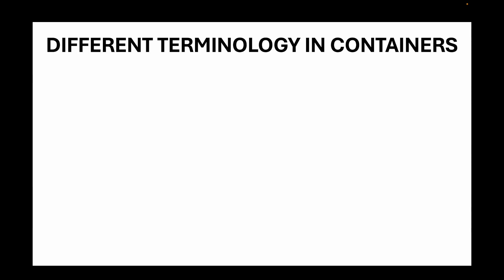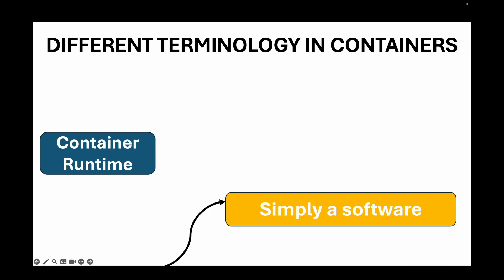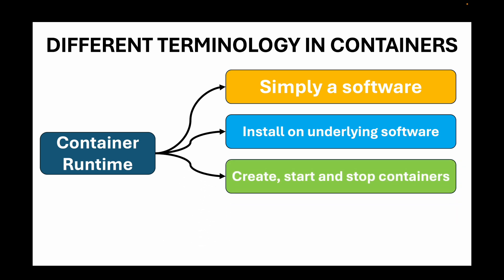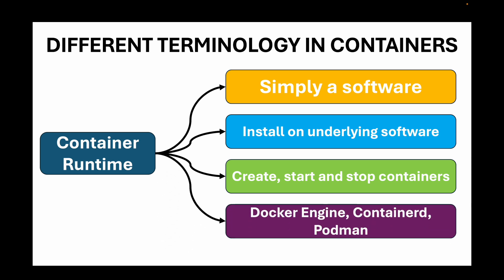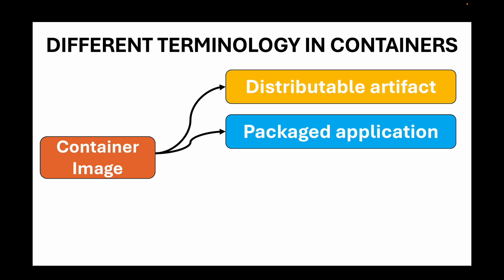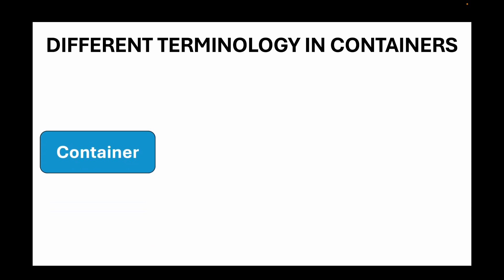The last thing to cover is the different terminologies in the container landscape. A container runtime is software we install on the underlying server whose purpose is to create, start, and stop containers. Popular container runtimes include Docker Engine, containerd, and Podman. A container image is a distributable artifact that contains the packaged application — everything needed for the application to run. Container runtimes download and extract container images to start our containers.